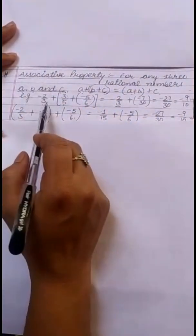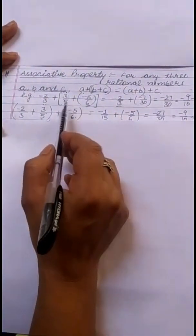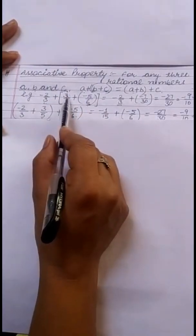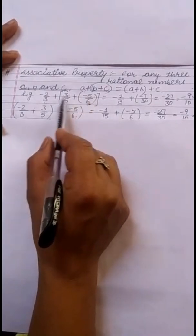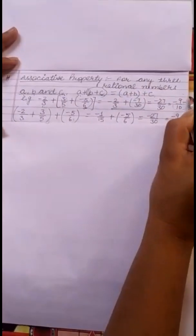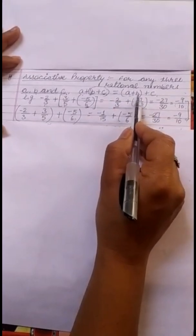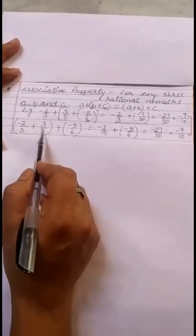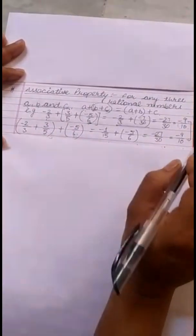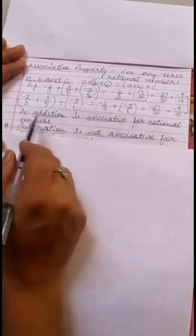Taking three rational numbers: minus 2 by 3, 3 by 5, and minus 5 by 6. First I add B plus C — that is 3 by 5 plus minus 5 by 6 — then add the result to minus 2 by 3, giving a final answer of minus 9 by 10. Changing the order by adding A plus B first (minus 2 by 3 plus 3 by 5), then adding minus 5 by 6, the answer remains the same. So addition is associative for rational numbers.